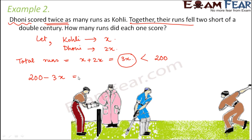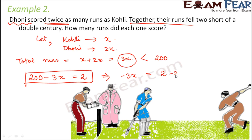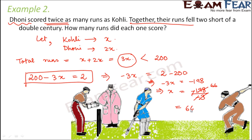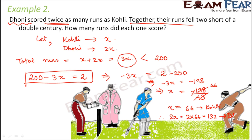Solving 200 minus 3x equals 2: minus 3x equals 2 minus 200, so minus 3x equals minus 198, giving x equals 198 divided by 3, which equals 66. So Kohli scored 66 runs and Dhoni scored 2 times 66, which is 132 runs.